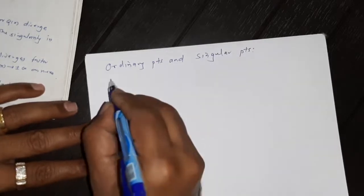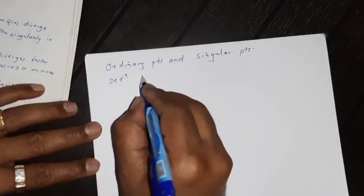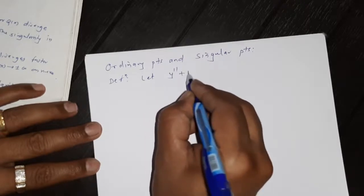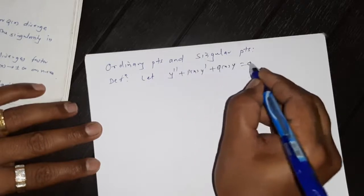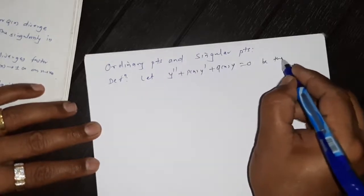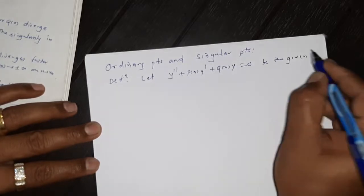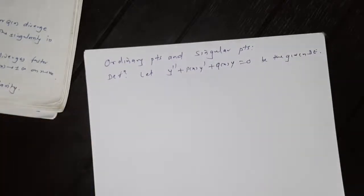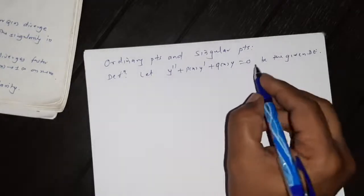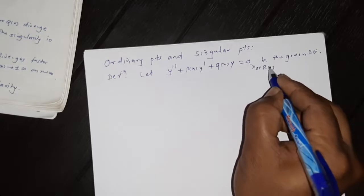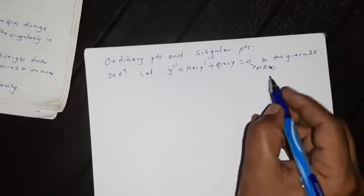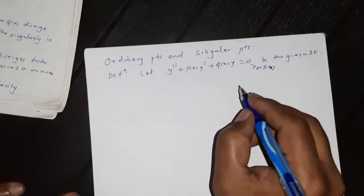Definition of ordinary points. Let y'' plus p(x) y' plus q(x) y equals 0, or equals r(x) — that is the given differential equation, which may be a non-homogeneous differential equation.